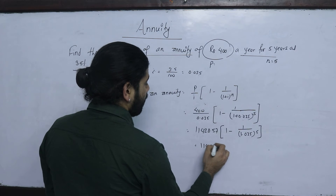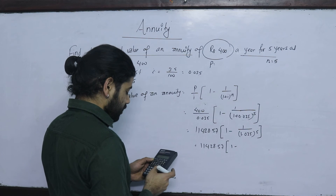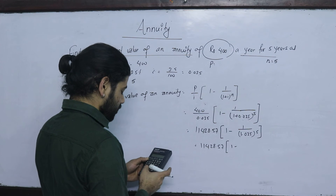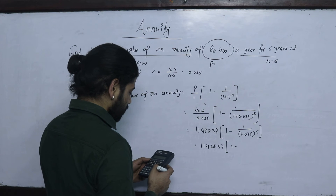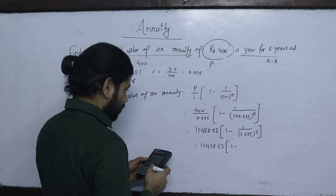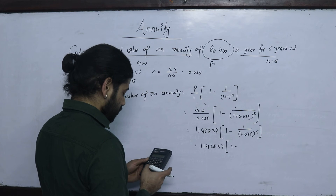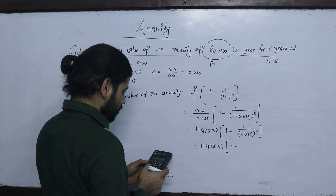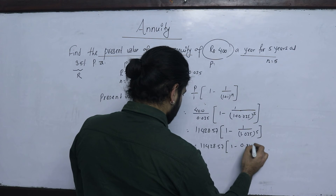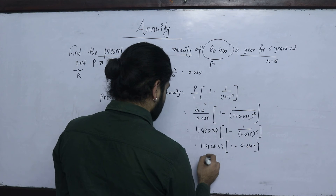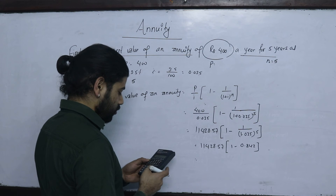We have 11428.57 multiplied by the bracket. Computing 1 divided by (1.035) to the power 5, we get approximately 0.8437. So the bracket becomes 1 minus 0.8437.